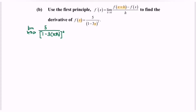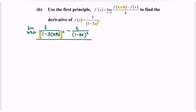Take note: the square is outside the bracket, so meaning that it is outside the bracket. Then we subtract 5 over 1 minus 3x bracket squared, all over h.